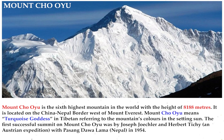Mount Cho Oyu is the sixth highest mountain in the world, with a height of 8,188 meters. It is located on the China-Nepal border, west of Mount Everest. Mount Cho Oyu means Turquoise Goddess in Tibetan, referring to the mountain's colors in the setting sun. The first successful summit on Mount Cho Oyu was by Joseph Jöchler and Herbert Tichy of an Austrian expedition, with Pasang Dawa Lama of Nepal, in 1954.